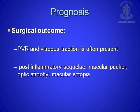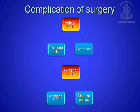Surgical outcome depends on the amount of PVR and vitreous traction, which is often present, with a lot of post-inflammatory sequelae. You can see macular pucker, optic atrophy, and macular ectopia. The gist is: anterior PVR causes traction RD in the periphery and hypotony, while posterior PVR causes traction RD again and a macular pucker, which compromises the visual prognosis.